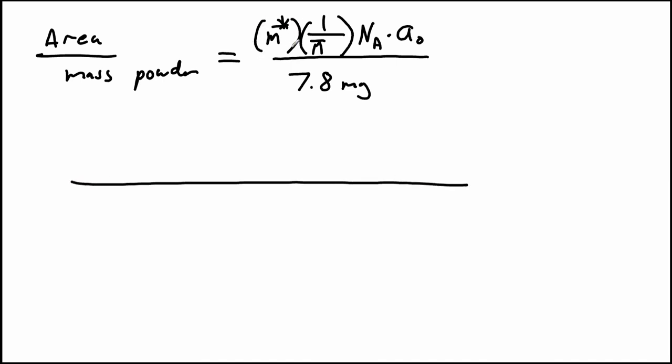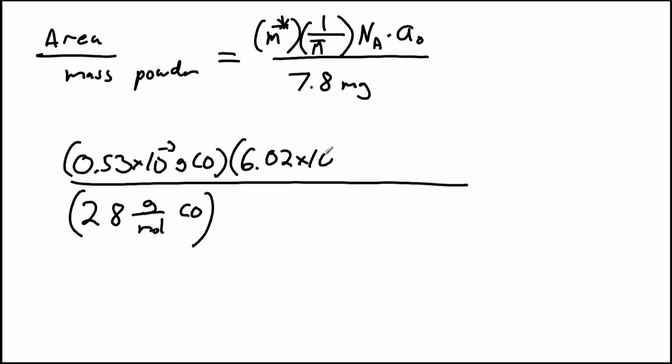So first let's put the mass of carbon monoxide that we could put on the surface at really high pressures. We're going to be converting this to moles. So let's just go ahead and put it into grams. So we said it was 0.53 milligrams. So we'll say 0.53 times 10 to the negative third grams of carbon monoxide. We're going to divide by the molar mass. So we know that's 28 grams per mole for carbon monoxide. We're going to multiply by Avogadro's number to convert from moles to the number of molecules. So 6.02 times 10 to the 23rd reciprocal moles.